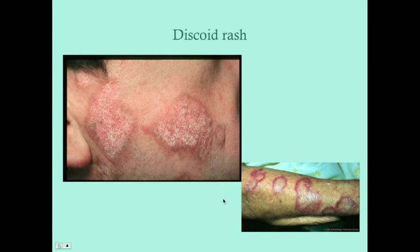There is systemic lupus erythematosus and then there's discoid lupus — these are two separate entities. They tend to be treated the same way, but discoid lupus is not quite as severe. The rash is what helps distinguish the two. Only about 15% of patients with discoid lupus will go on to develop systemic lupus. Discoid lupus is primarily a disease of the skin.